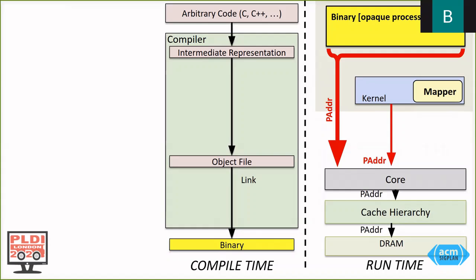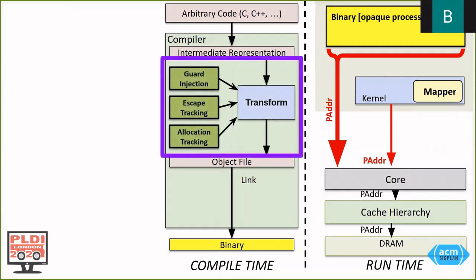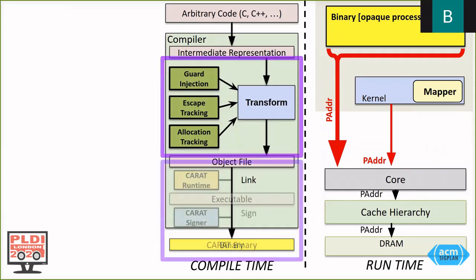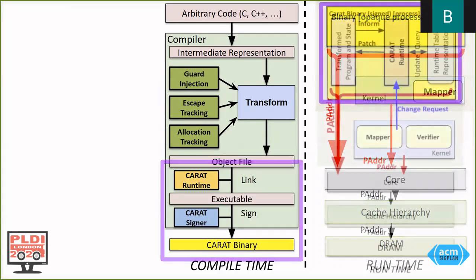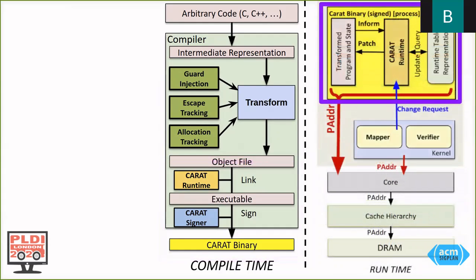It does so by making two changes in software. The first is a set of compiler passes that will track and protect memory. The second is linking programs with a CARET runtime and signing the binary. This results in a binary that works cooperatively with the kernel to implement the functions originally provided by virtual memory.